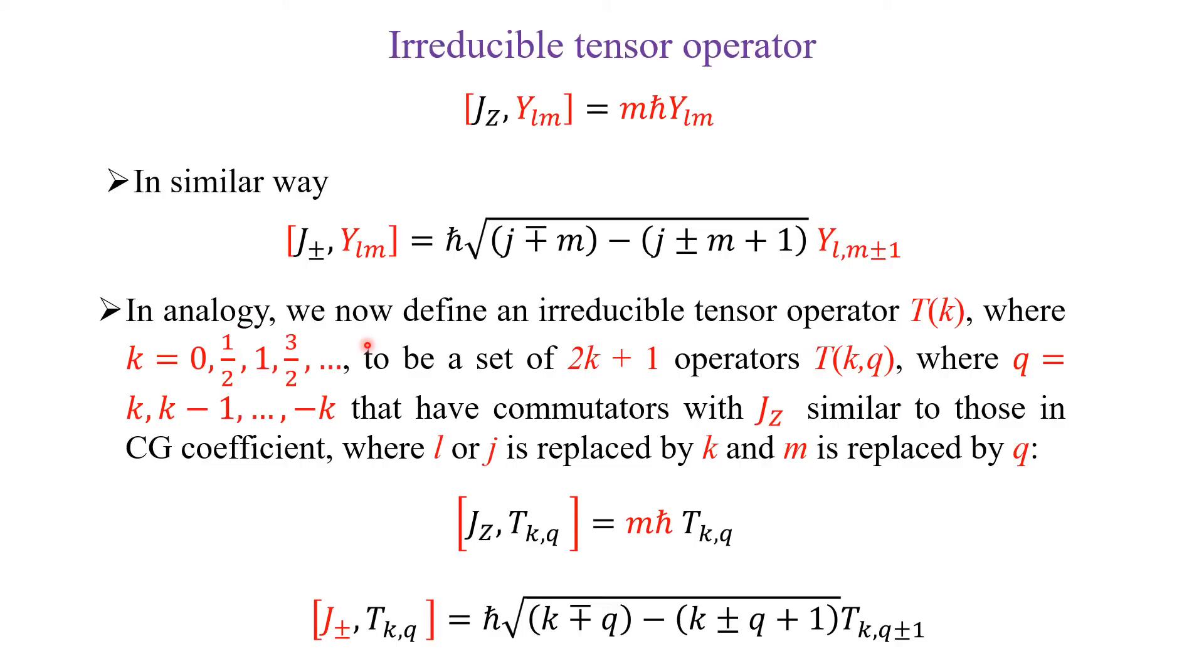In analogy, we now define irreducible tensor T_k, where k represents the rank of the matrix. That is, k equal to 0, half, 1, 3/2, and so on. So, to be set of 2k+1 operators.